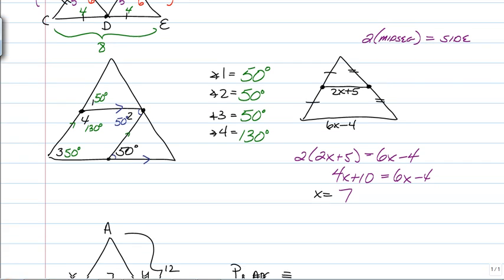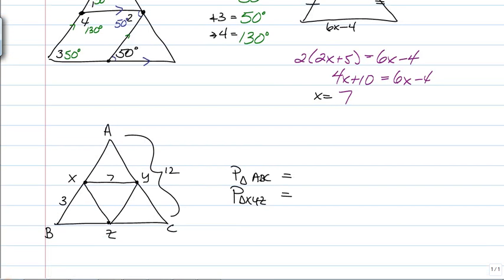So, there's one problem left. I would like you to find the perimeter of triangle ABC and the perimeter of triangle XYZ with the given diagram and information. Pause the video and give it a try. We'll see how you do.